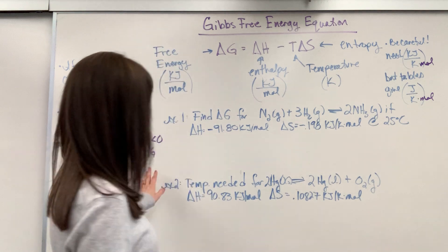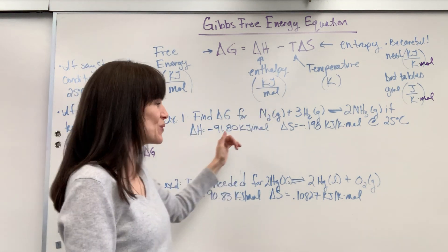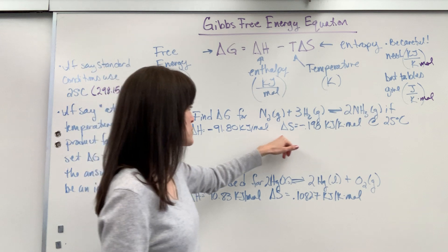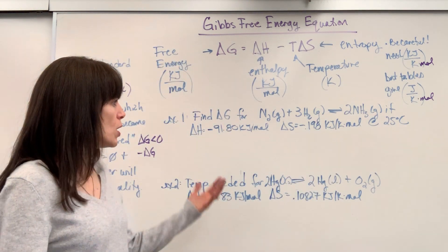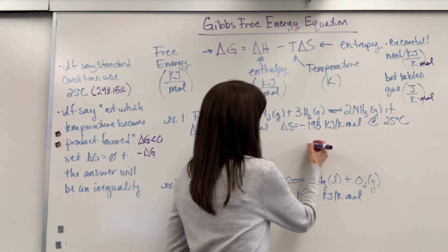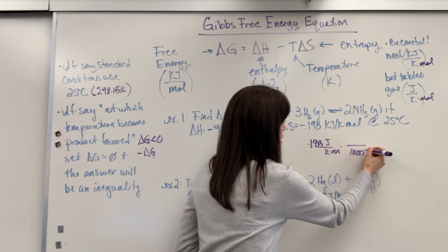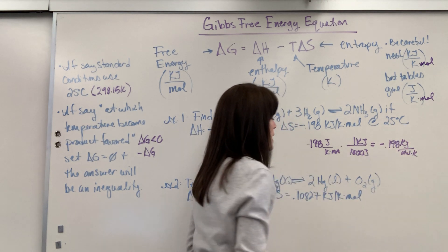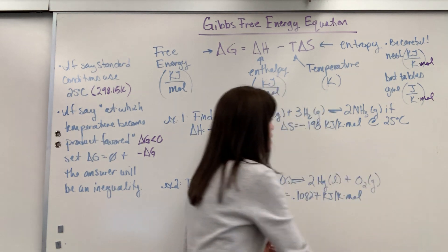Okay, so here's example problem one. We want to find delta G for our Haber process. Nitrogen plus hydrogen produces ammonia. If the delta H is negative 91.80 kilojoules per mole, and if delta S is negative 0.198 kilojoules per Kelvin times mole at 25 degrees C. So we're going to plug everything in. Notice, I already converted this. If it had been at joules, it would have been negative 198 joules per Kelvin times mole. I would just divide by 1,000 joules to get that to kilojoules. So be really careful. It's got to be in kilojoules.